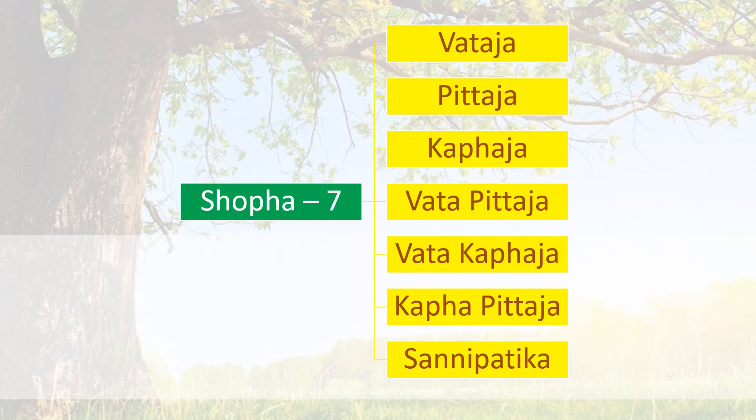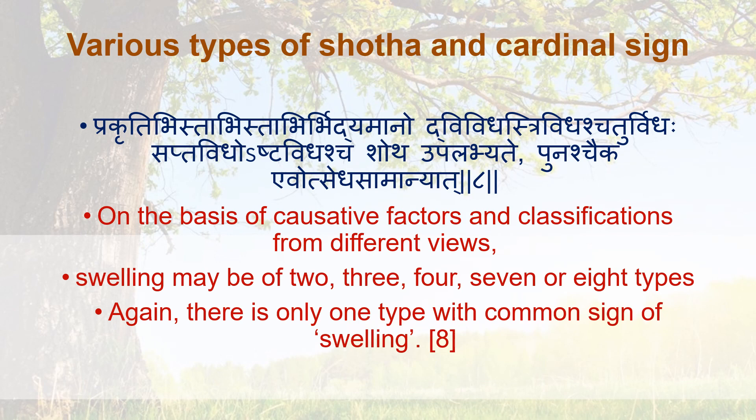So the seven types of Shotha are enumerated. On the basis of causative factor and classification, swelling may be of two, three, four, seven, or eight types. Again, there is only one type with the common sense of swelling.